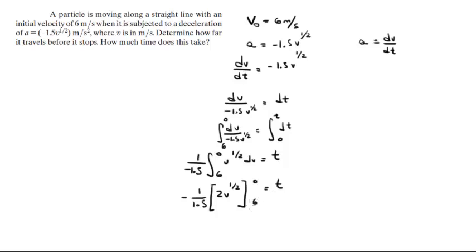So when you solve this you get negative 1 over 1.5 times negative 2 square root of 6 is equal to t. When you plug all this into your calculator, you get t is equal to 3.27 seconds.